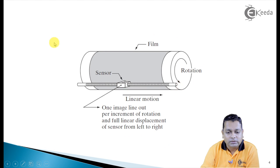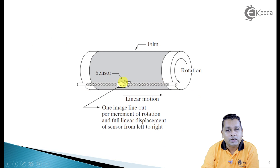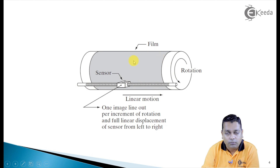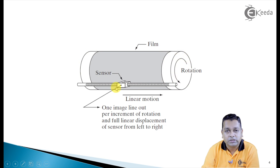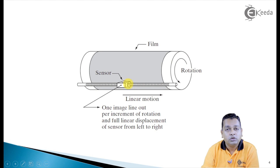For motion in x and y dimensions, this system is used. The single sensor is mounted on a rod and can displace from the left end to the right end along the film where the image is imposed. Another rod provides rotation so that the rotation of the larger rod combined with the sensor gives displacement in both x and y dimensions, allowing a two-dimensional image to be captured.